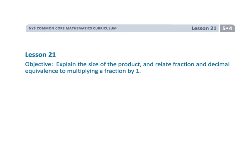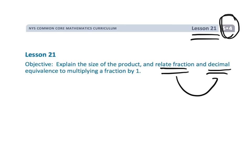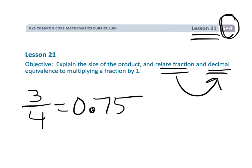That wraps up this lesson — 5th grade, module 4, lesson 21 — where we are writing fractions as their decimal equivalents. Things like 3 quarters equals 0.75.